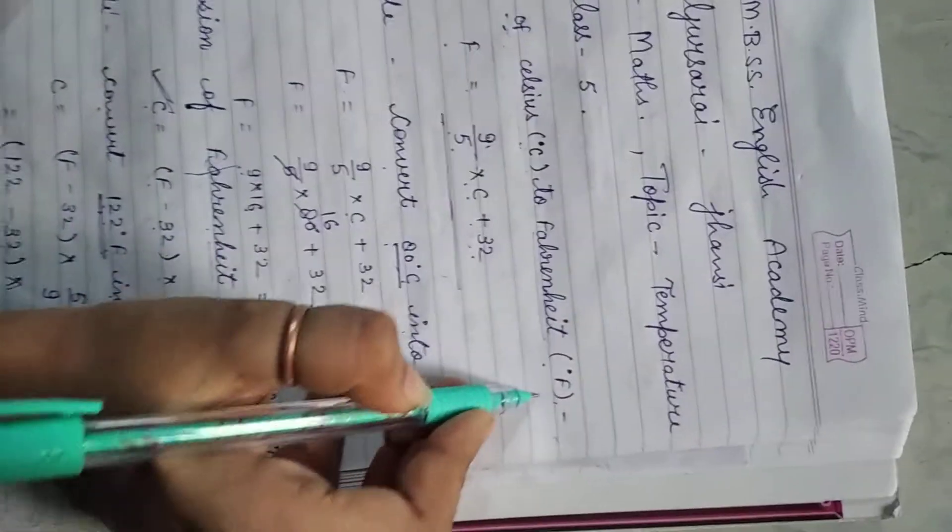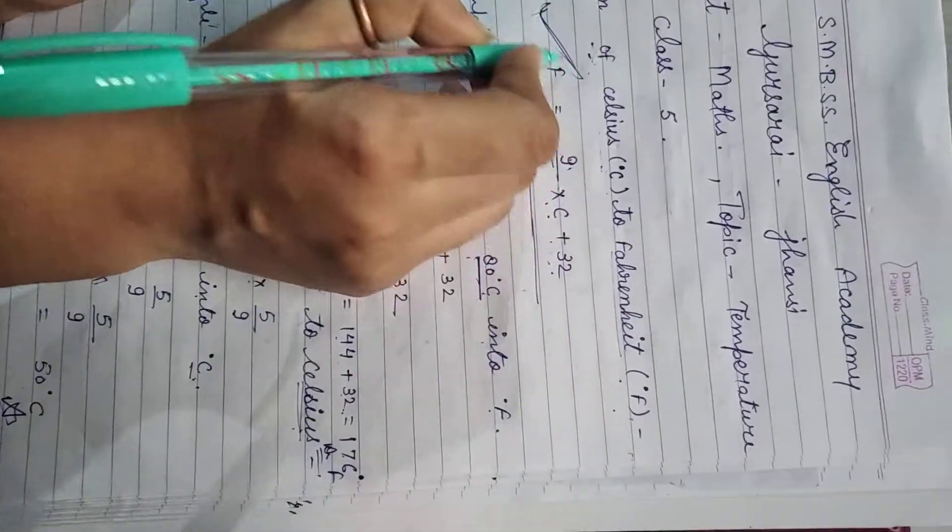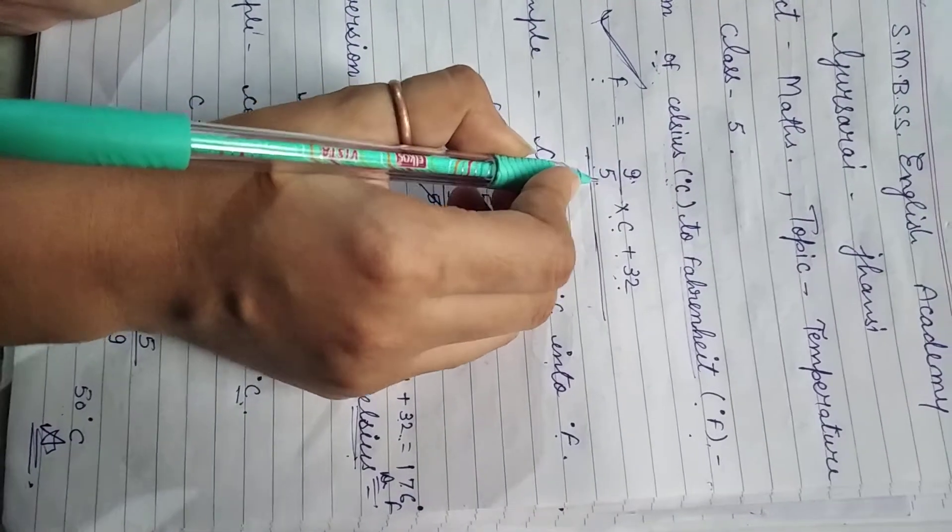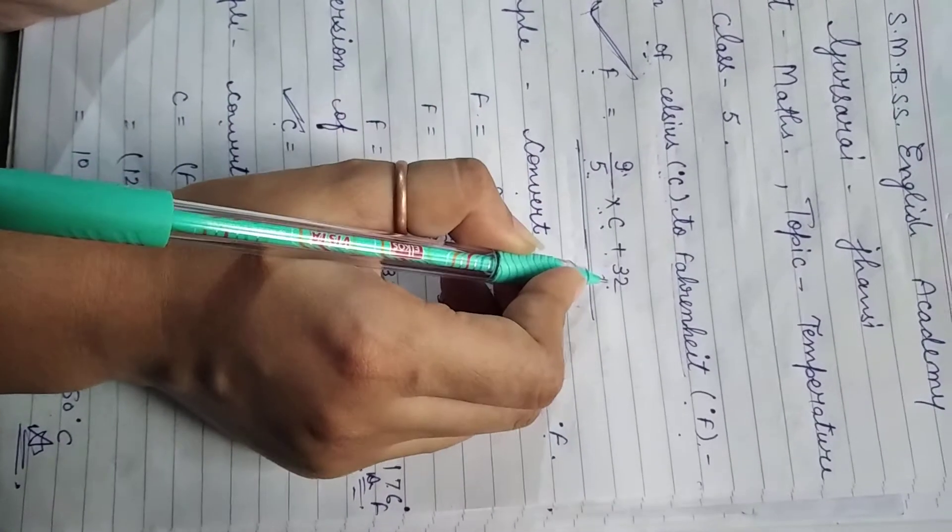First, conversion of Celsius to Fahrenheit. The formula for this conversion is F equals 9 upon 5 into C plus 32.